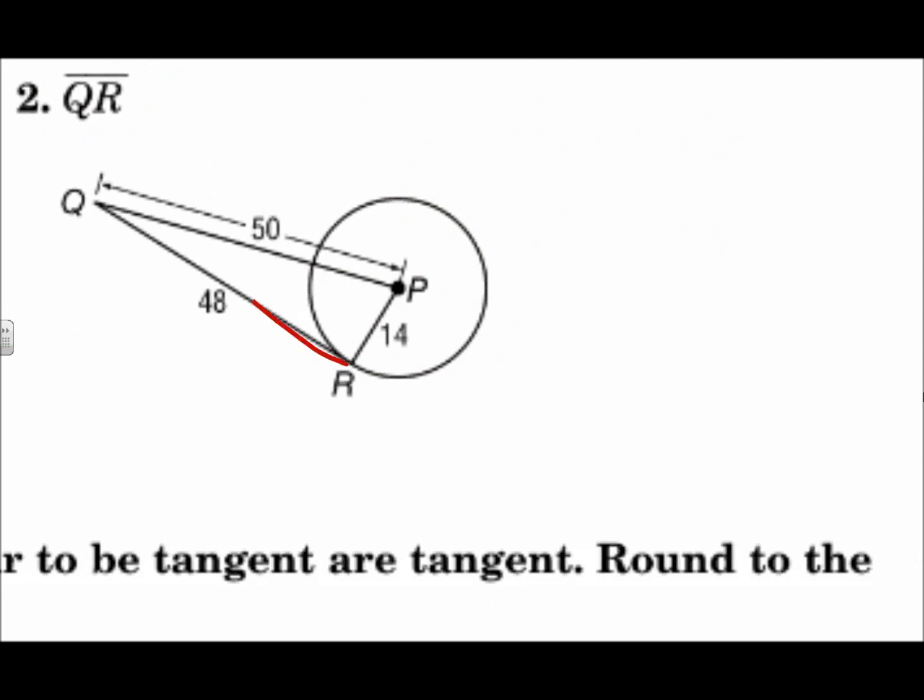Number two is segment QR tangent to the circle. Well, we need a right angle there, so let's test the Pythagorean theorem. 14 squared plus 48 squared equals 50 squared. 14 squared plus 48 squared is 2,500. 50 squared is 2,500. Those are equal, so that is a right triangle.